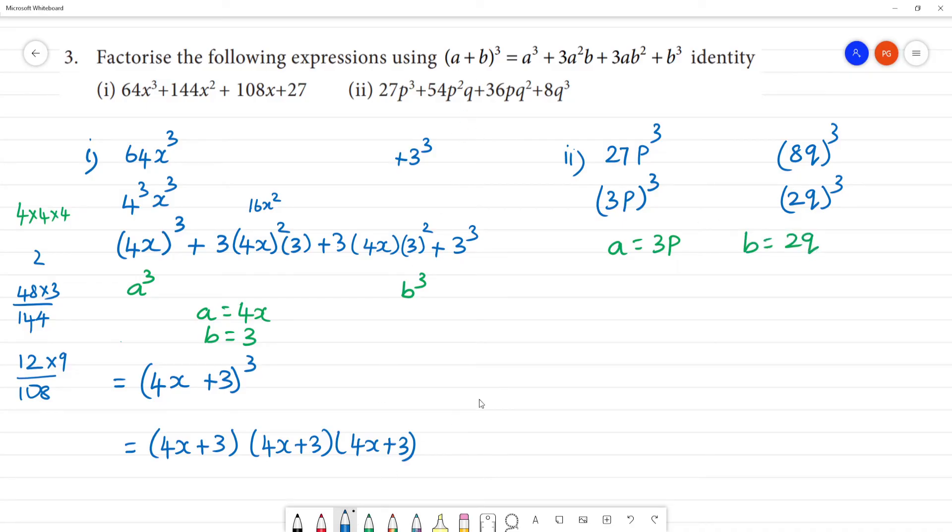So this is (3p+2q)³. What are the factors? (3p+2q)(3p+2q)(3p+2q).